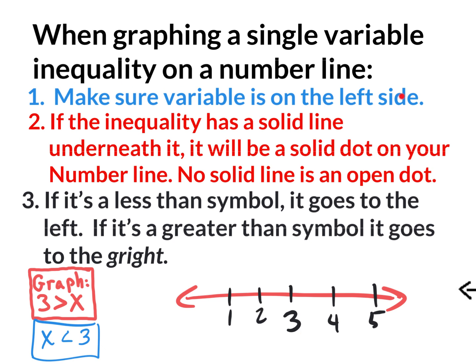First, make sure the variable is on the left side. Number two: if the inequality has a solid line underneath it, it will be a solid dot. Do we have a solid line underneath this inequality? No — so the dot is not going to be solid. Go to 3 and put an open dot there, do not fill it in. And then: if it's a less than symbol, it goes to the left, because less than is left and greater than is right. X is less than 3, so we go left. Open dot at 3, to the left.